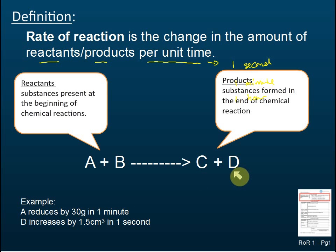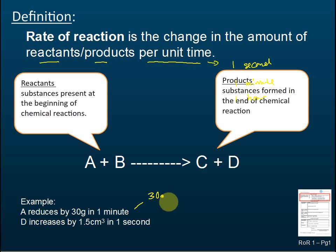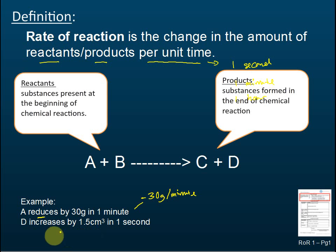For products, if D is a gas, D increases by 1.5 centimetres cubed in one second — that is also a rate of reaction. We write these as negative 30 grams per minute for a reactant that reduces, because it decreases, so we use a negative sign.